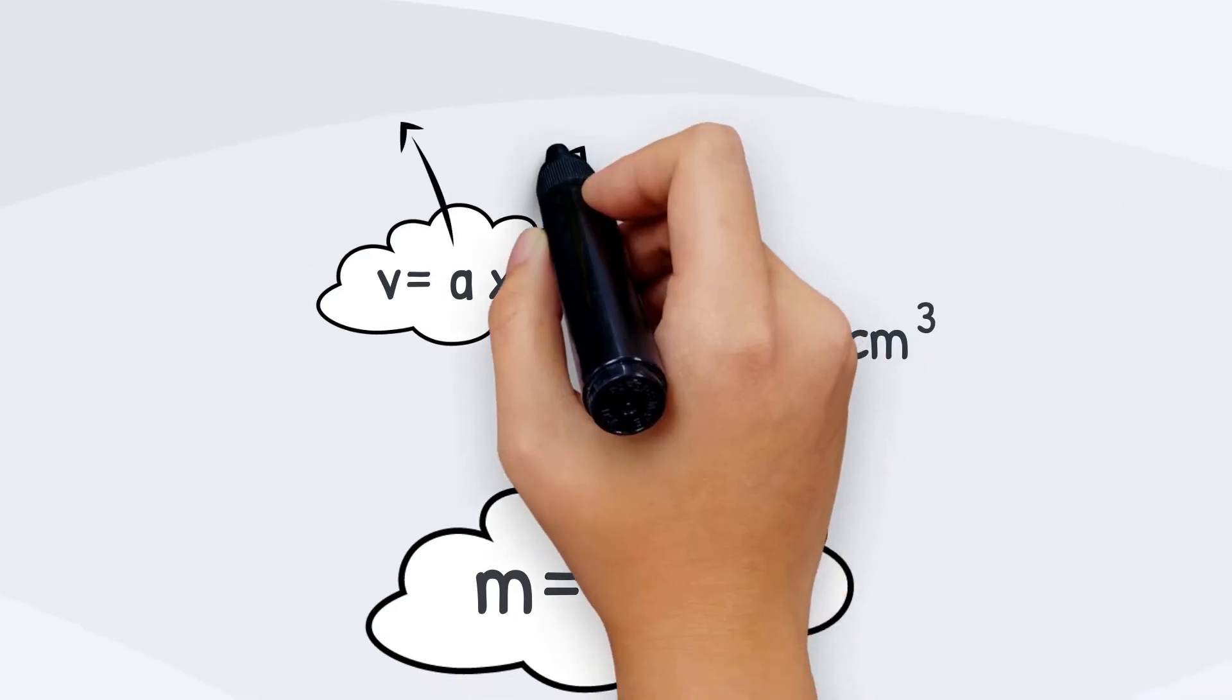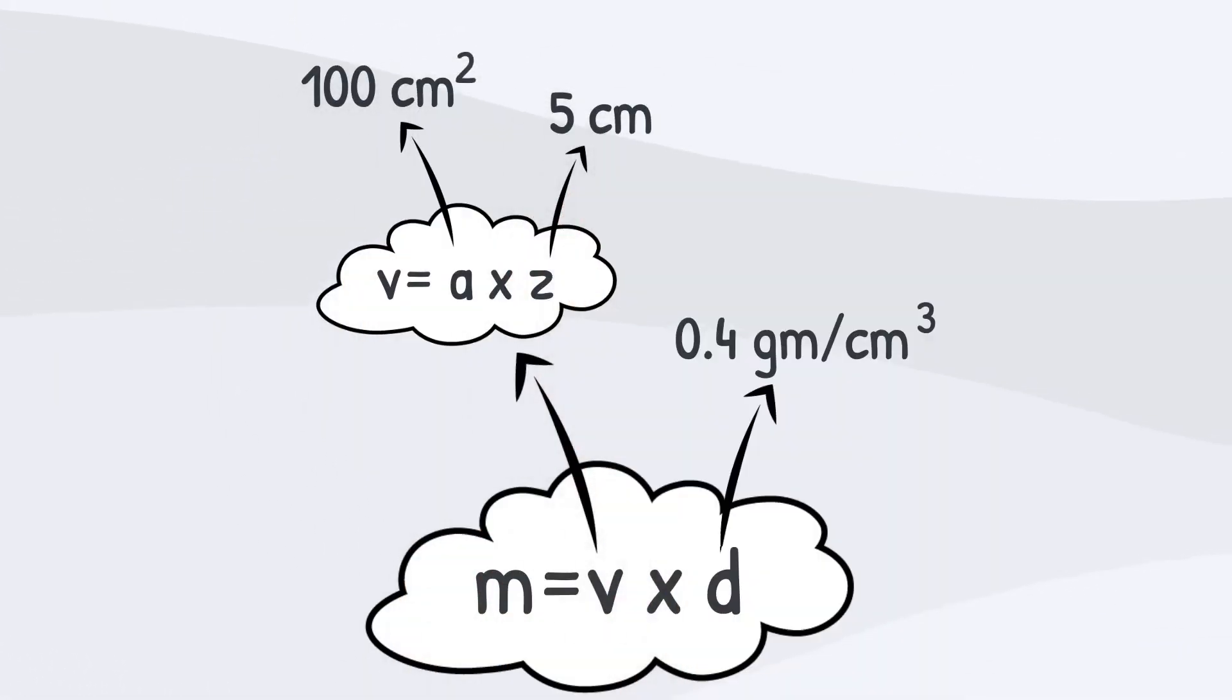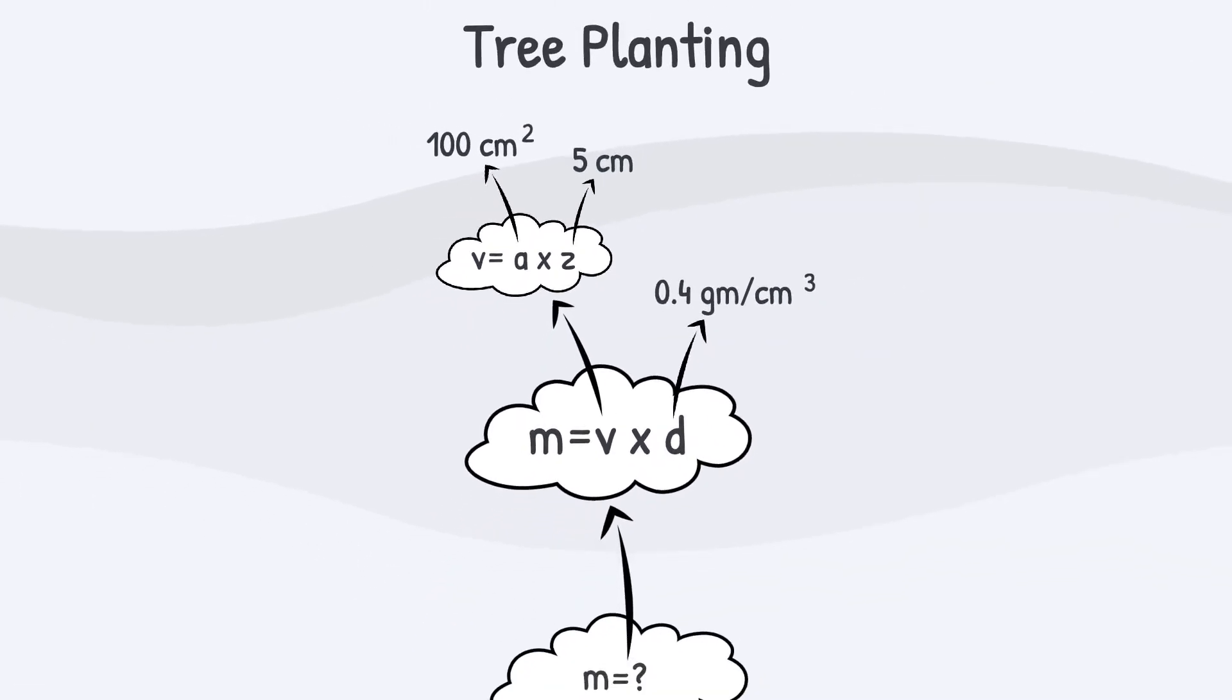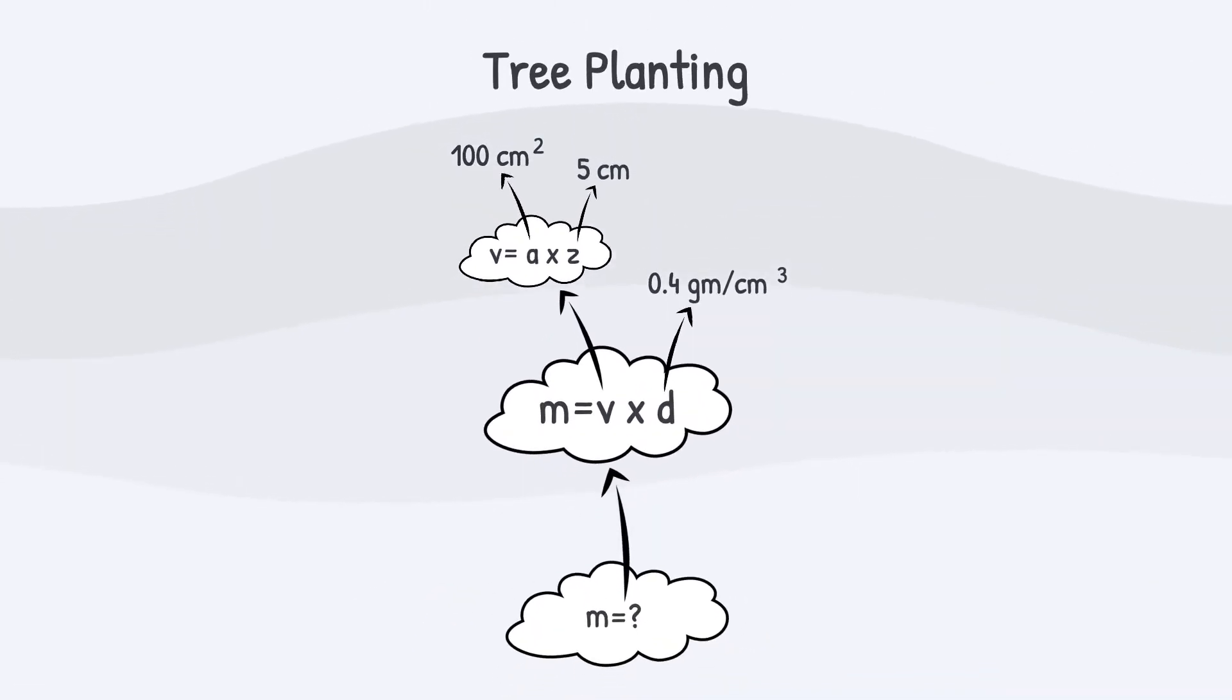Again, draw the remaining arrows and write the given quantities. Now check. Is there any arrow that does not end with numbers? No, there isn't. Yup, it's done. Our first step is finished now.